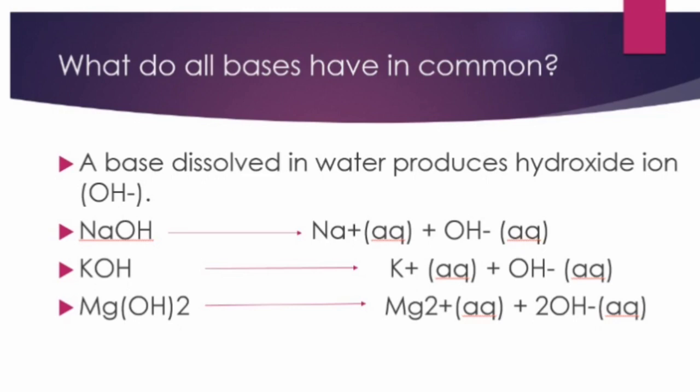Acids have H+ (aqueous) whereas bases have OH− (aqueous) to give them their characteristic features. Potassium hydroxide, if it dissociates, gives potassium cations and OH− (aqueous). Similarly, magnesium hydroxide dissociates into Mg2+ (aqueous) and OH− (aqueous).